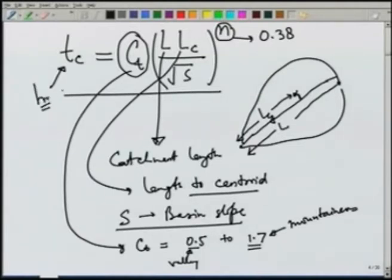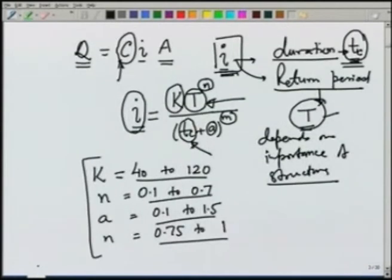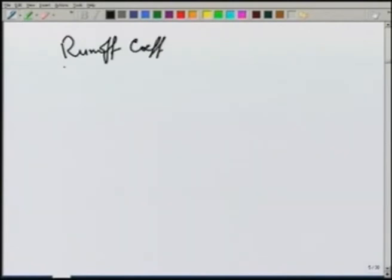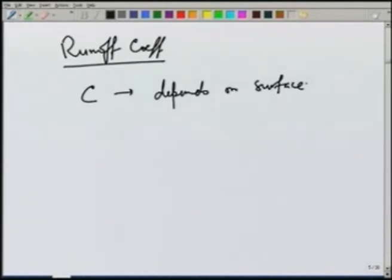Using the time of concentration and the values of k, n, a, m, and design return period T, we can obtain rainfall intensity i, and then using Q = C·i·A we get Q, provided C is known. The runoff coefficient C depends on many properties: surface permeability (impervious surfaces give higher C), slope (steeper slopes mean higher velocity, less infiltration, higher C), and land use (industrial areas are paved; agricultural areas are not).